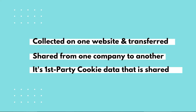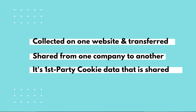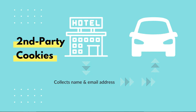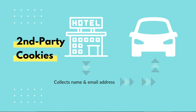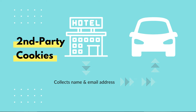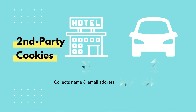Second party cookies — this data is exchanged as a partnership between companies. Second party cookies are actually first party cookie data that is transferred from one company to another through a partnership. For example, if I am a hotel chain and I collect first party cookie data — think names and email addresses — I can form a partnership with a car rental company to share that data with them so they can specifically target ads to those people.